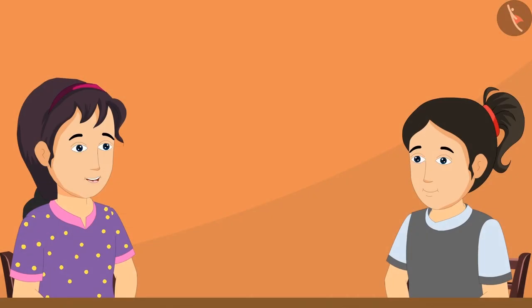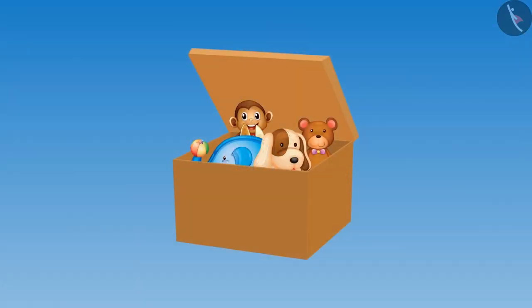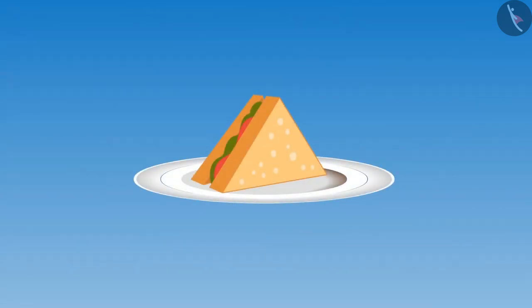Both sisters exclaim that they found something. Meena says, let me show you the object I found first. Here is my toy box, and see — the lid makes an angle less than a right angle! Riva replies, oh wow! But my angle is very tasty, Riva. Look at this sandwich — it has three angles and all of them are angles less than a right angle. Yes, this angle is very tasty!